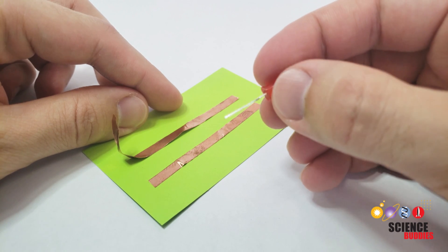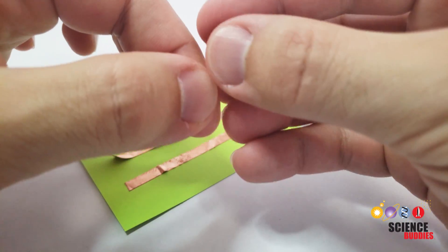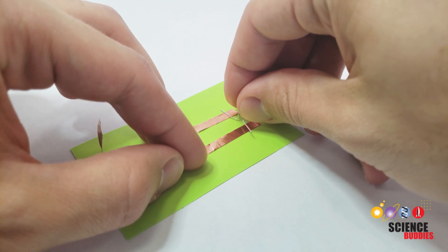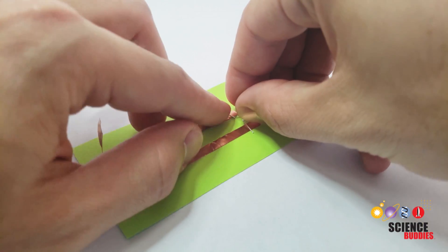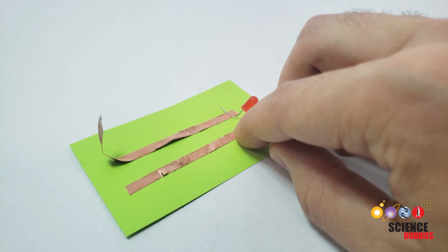Now, take an LED and bend the legs outward 90 degrees so you can put it flat on the paper. Put the LED down, and then you can use either clear tape or copper tape to stick it to the existing copper tape traces. I'm going to use clear tape for now to make it easier to see the legs of the LED.